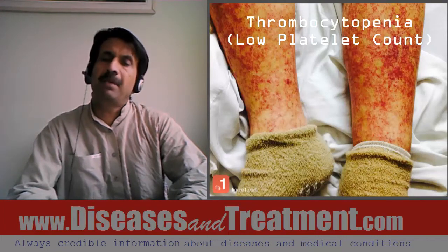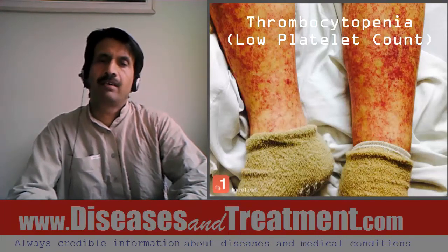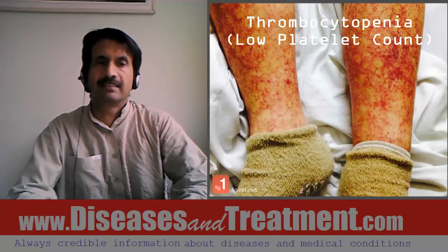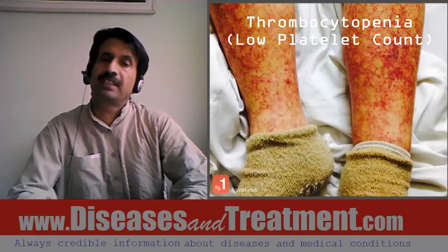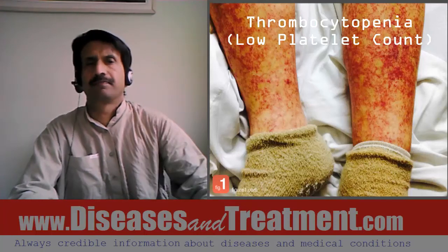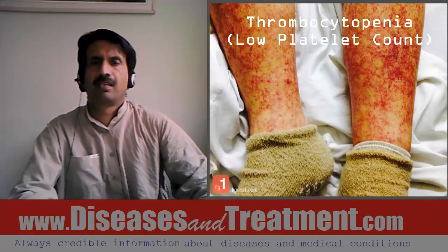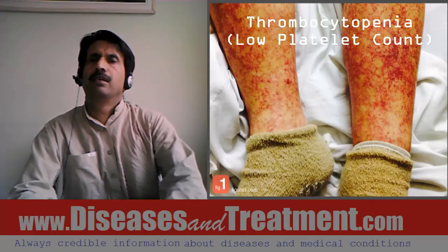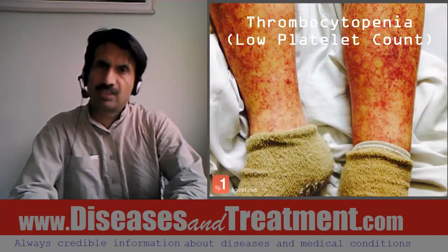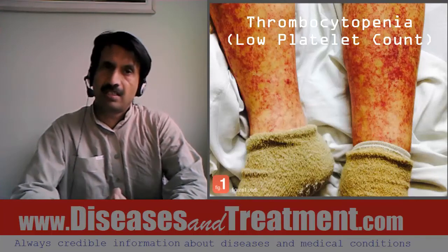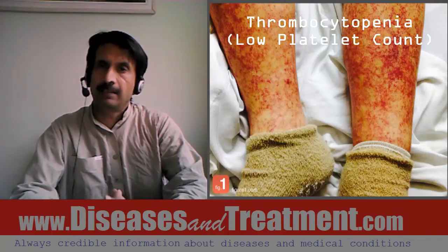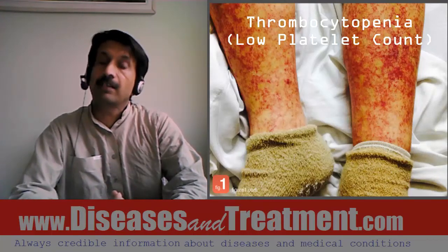Thrombocytopenia may be inherited or acquired when conditions occur, such as the use of certain drugs. The causes of thrombocytopenia can be classified into three groups. Number one is diminished production, which is caused by viral infections, vitamin deficiencies, aplastic anemia, and drug-induced causes as well.